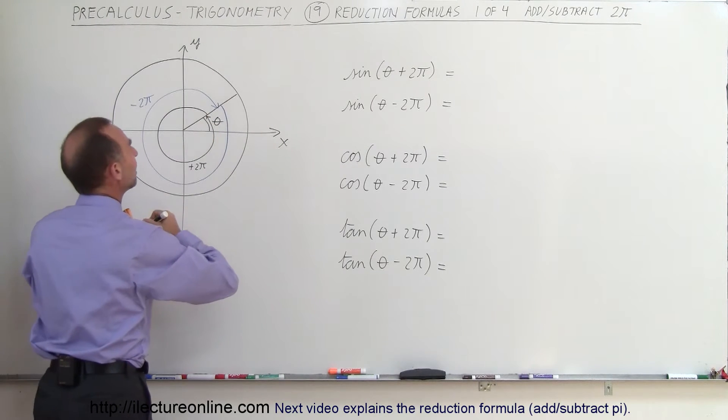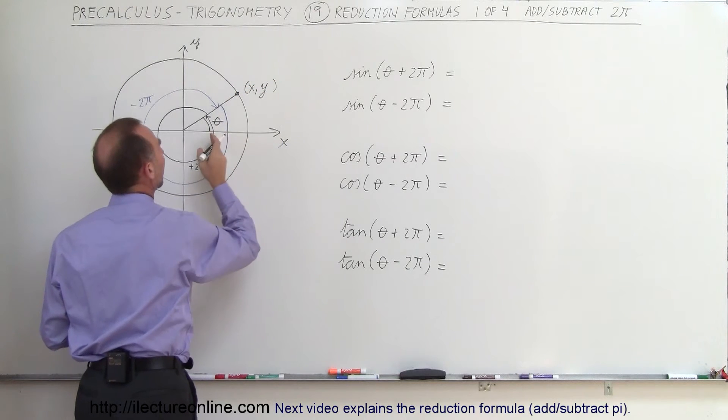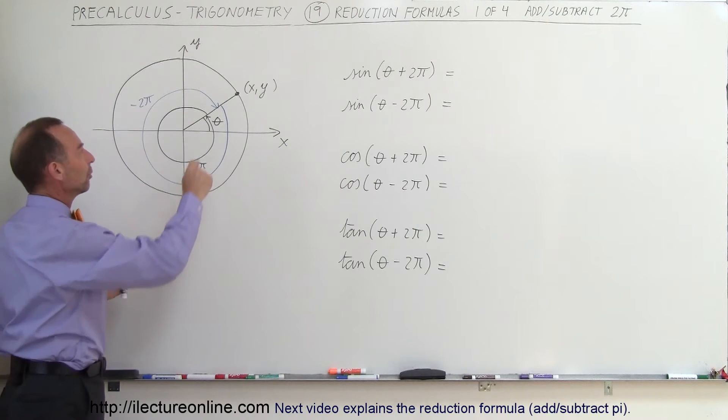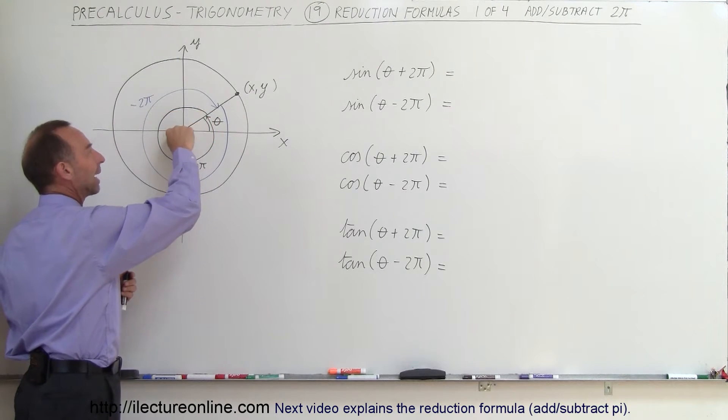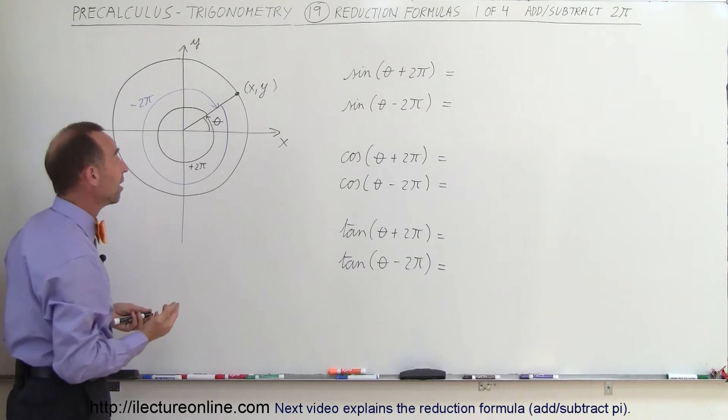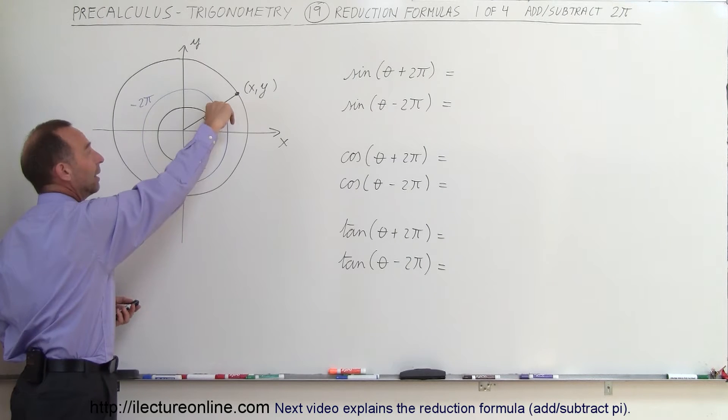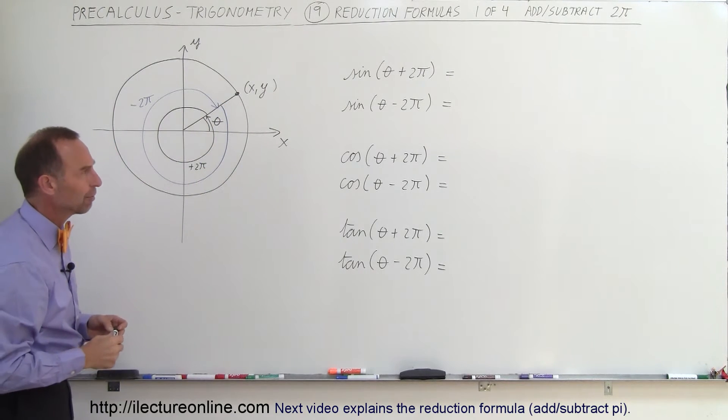Let's say I have a point on the unit circle here (x,y) and it's defined by the angle theta. Now what happens if I add 2π to it? From this location, if I add another 2π, which is 360 degrees, I get to the exact same place and my (x,y) value will be exactly the same. Or if I subtract 2π, if I go in the other direction 360 degrees, I end up in the exact same place as before.